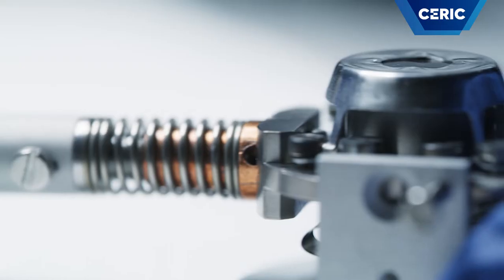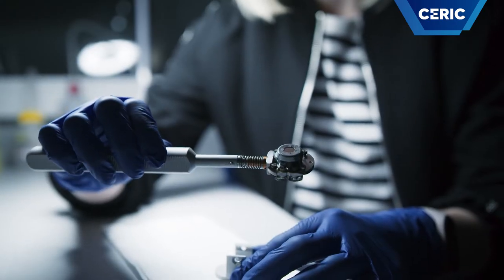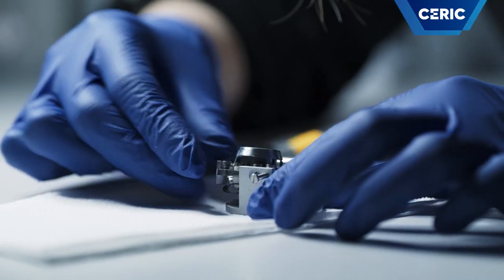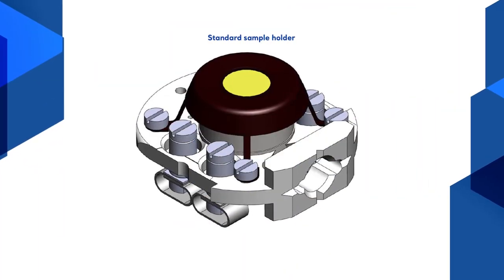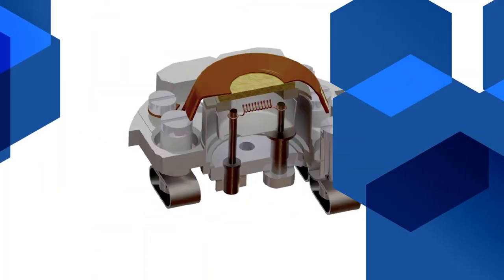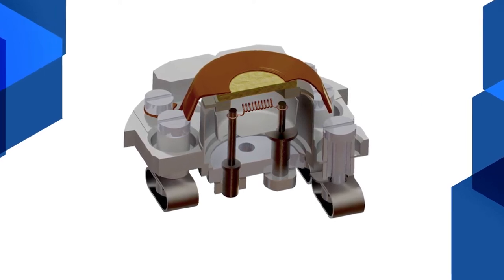Samples for the PEEM microscope have to be flat, conducting and UHV compatible. Typical size is around 10 mm in diameter. There are two types of sample holders: standard sample holders have a thermocouple and high voltage and allow high temperature measurements, while sample holders with an adapter for printed circuit board plates are used for current pulses.